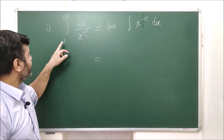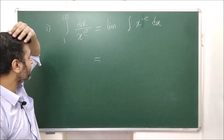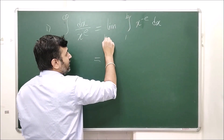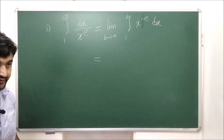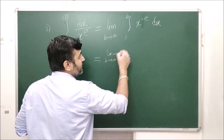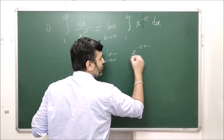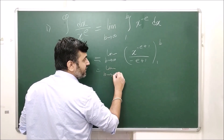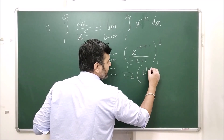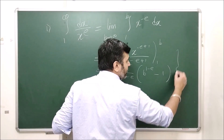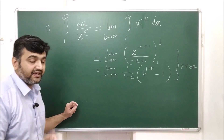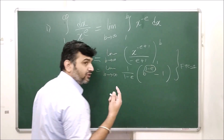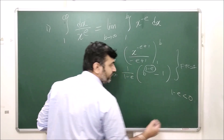Let's look at an example: integral from 1 to ∞ of dx / x^e. As soon as we see the unbounded domain, this is an improper integral of type 1. By definition, we write this as limit B → ∞ of the integral from 1 to B of dx / x^e. Now the domain is bounded, so by FTC2, the antiderivative is x^(1−e) / (1−e), giving limit B → ∞ of [1/(1−e)] · B^(1−e) − 1 evaluated.